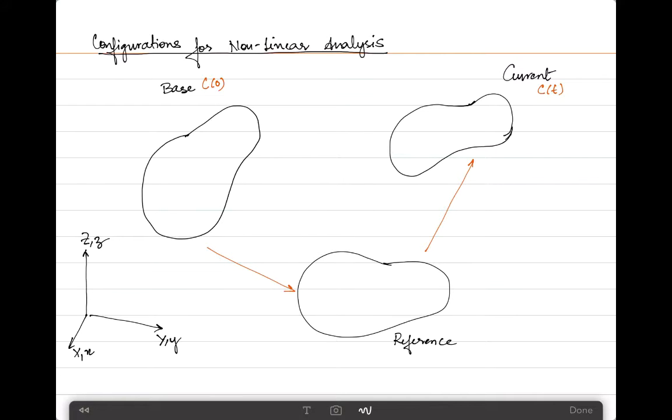The first reference frame is the material global frame, shown by capital XYZ axes, and the other is the spatial global frame, shown with lowercase XYZ. In this example, we've taken them to be identical, but you can use different ones and have a transformation between the two coordinate systems. We can use these material and spatial reference frames as base frame or current reference frame.